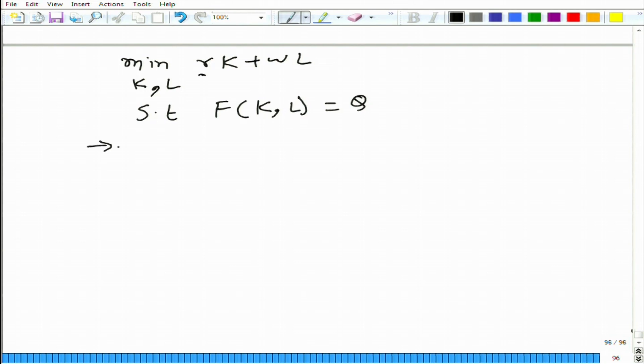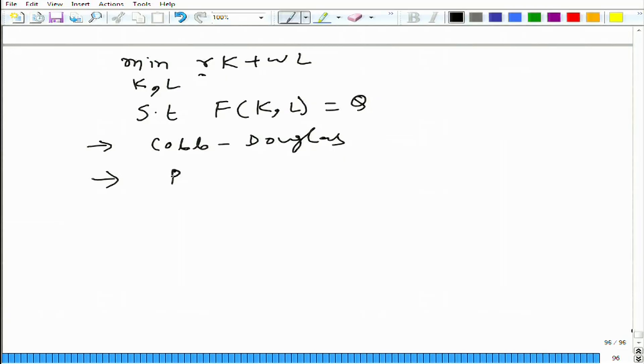And we took three examples. One example was Cobb-Douglas, not necessarily in this order. Second, where the inputs are perfect substitutes of one another, and then perfect complements.